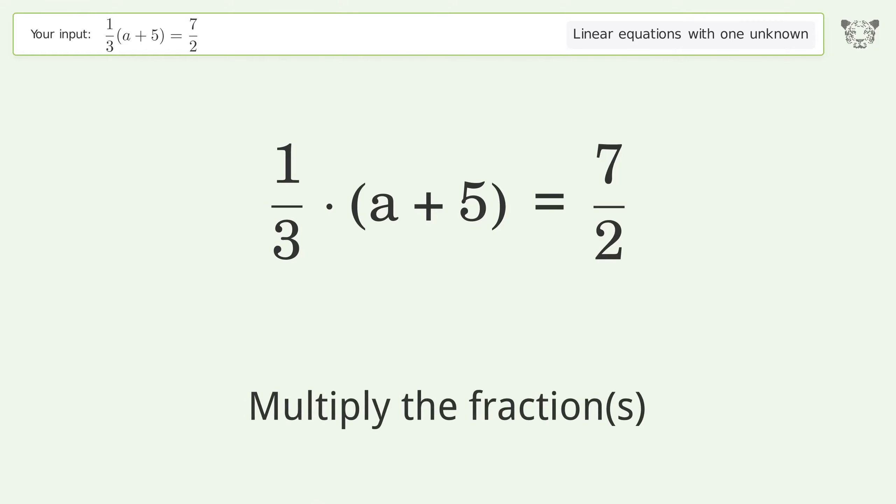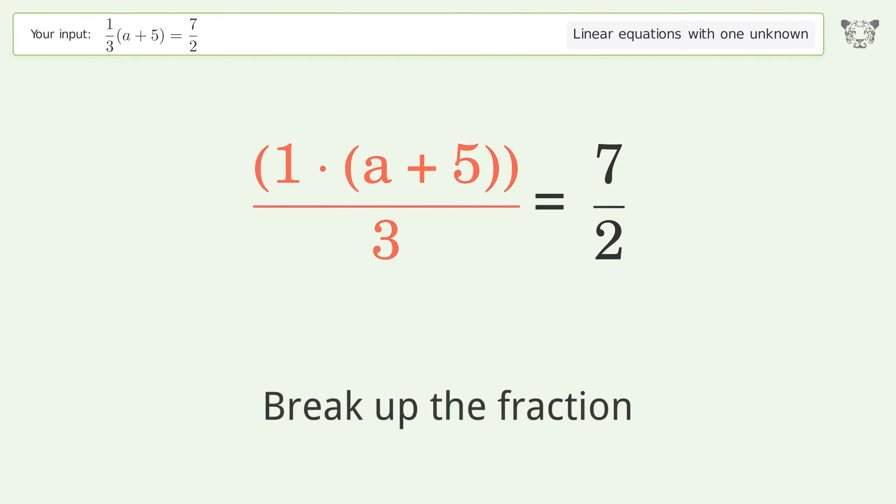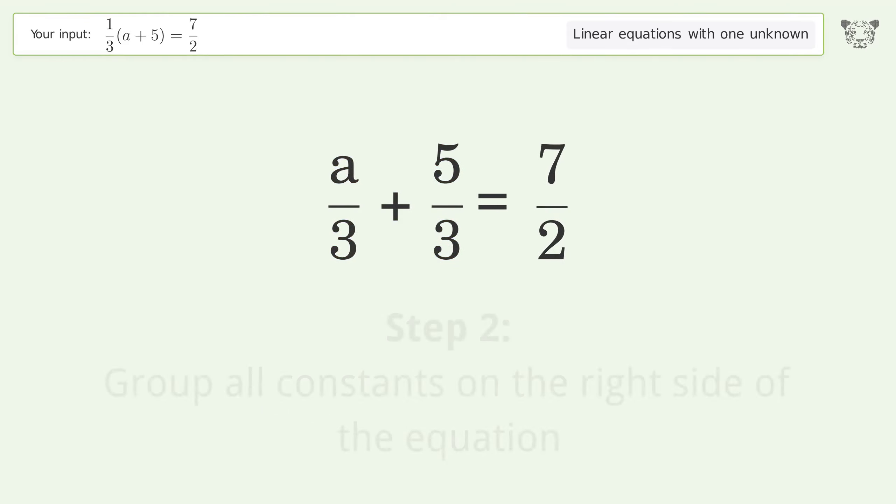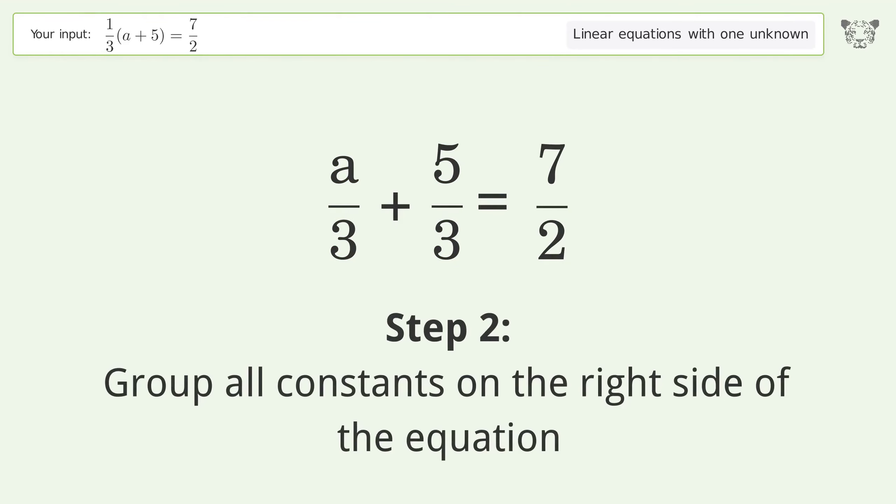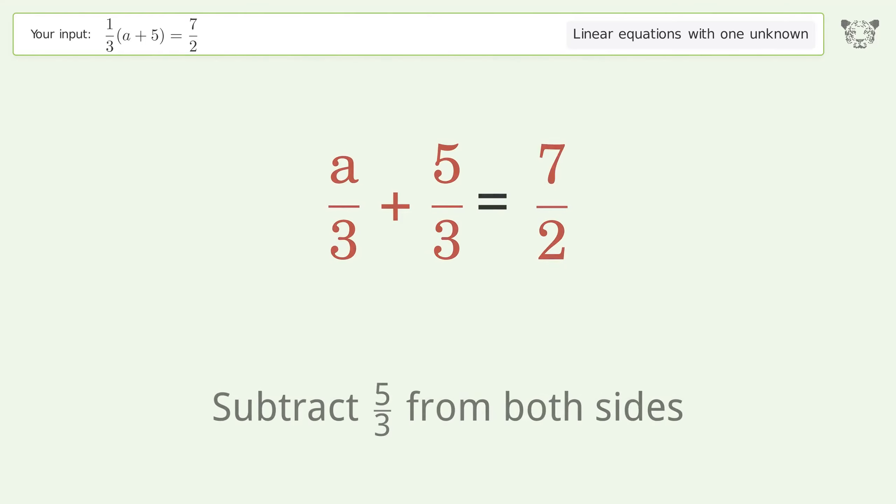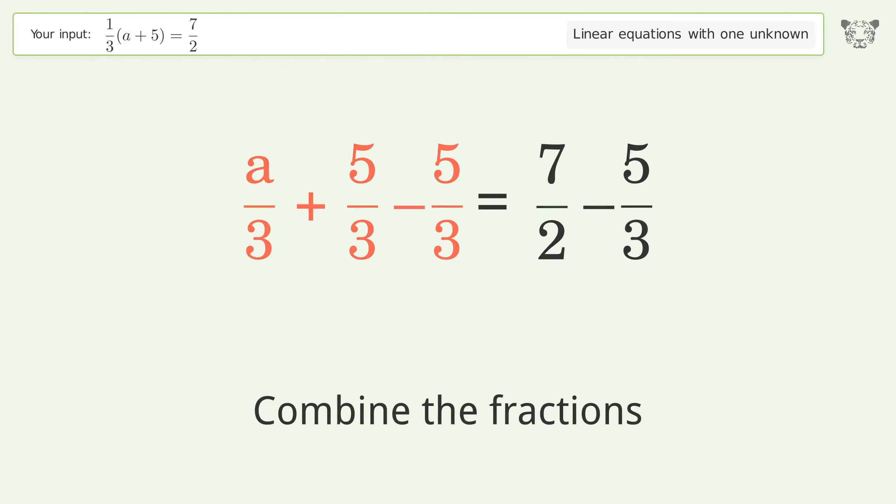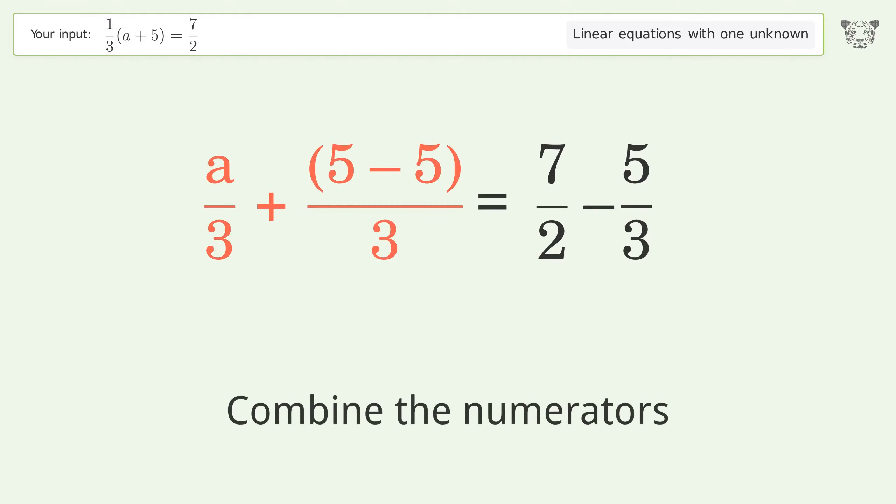Multiply the fractions. Break up the fraction. Step 2: Group all constants on the right side of the equation. Subtract 5 over 3 from both sides. Combine the fractions. Combine the numerators.